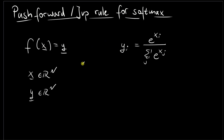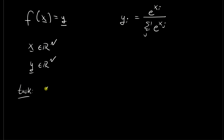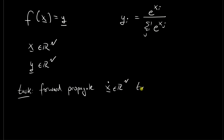For the push forward or Jacobian vector product rule, we are in a forward mode automatic differentiation setting. Our task is to forward propagate tangent information on the input x_dot, which is another n-dimensional vector, to tangent information on the output y_dot, which will also be an n-dimensional vector. This will be the content of this video.